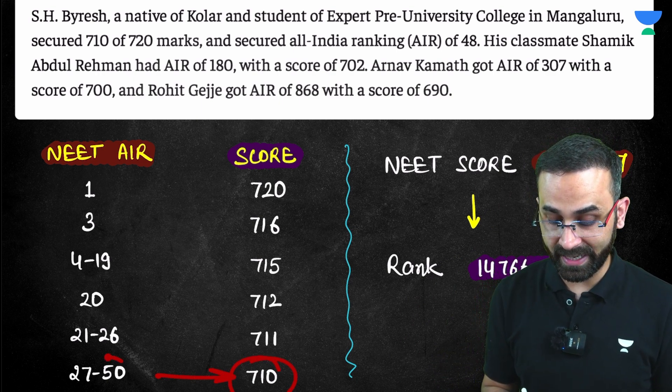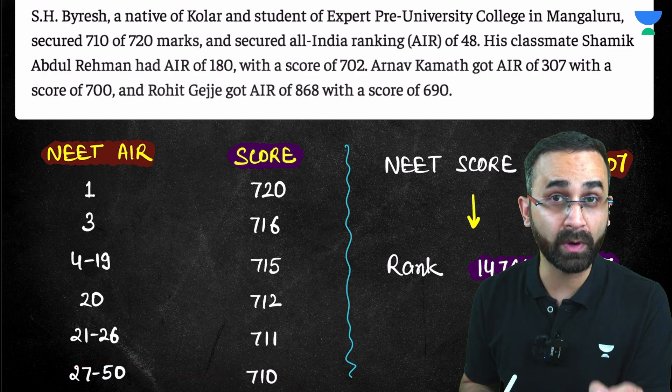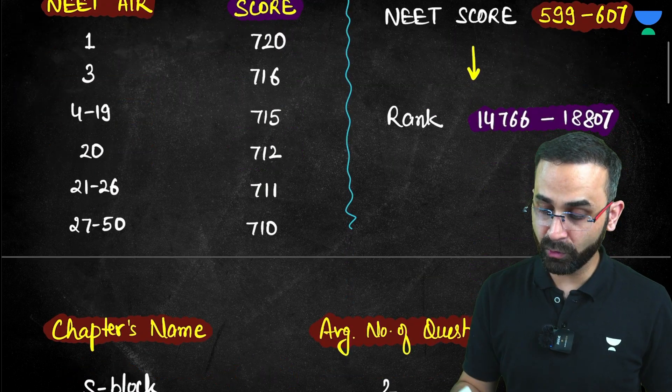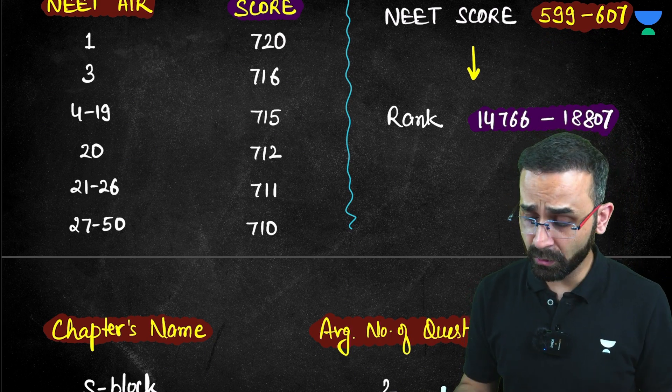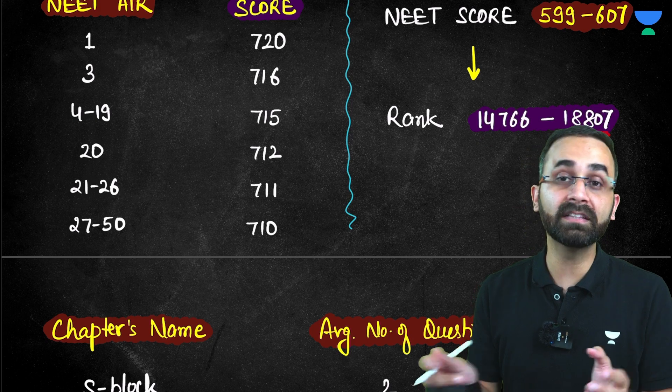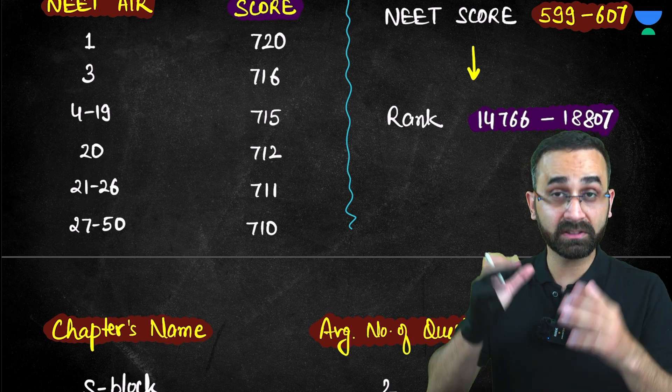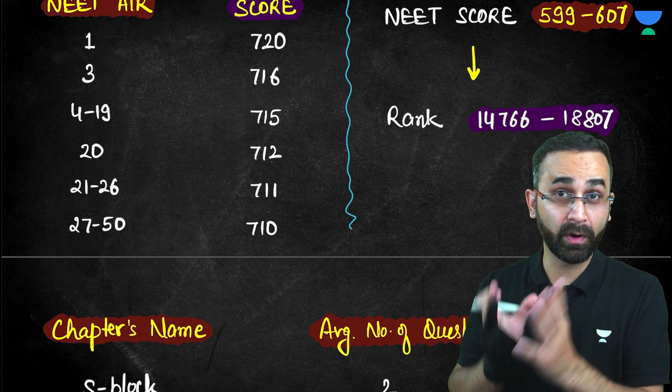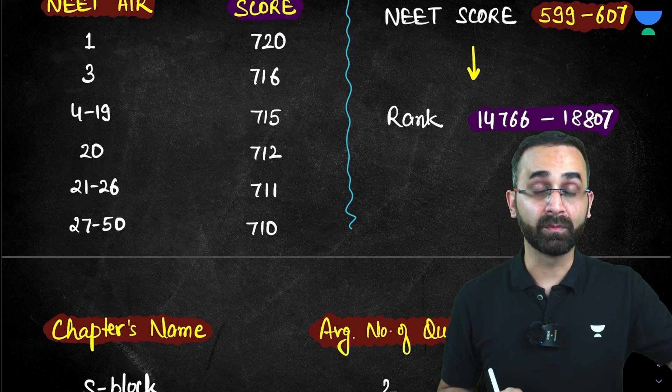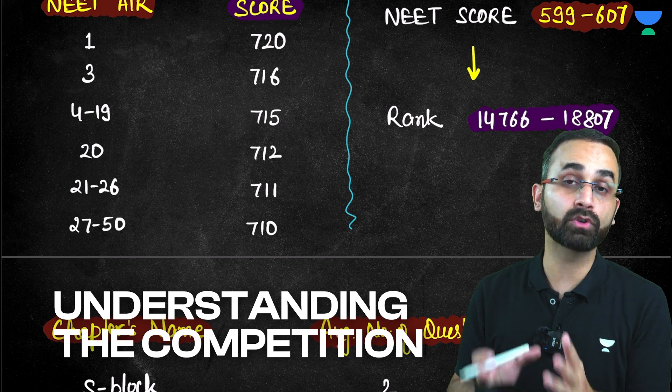So students scoring 710 are getting a rank between 27 and 50. And if you have a score between 599 and 607, then your rank is 14,000 to 18,000. So that is the competition. You must understand the competition first because developing the strategy or working towards that perfect score requires you to understand the competition.